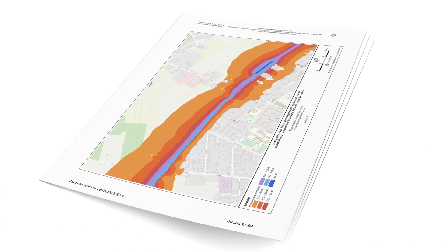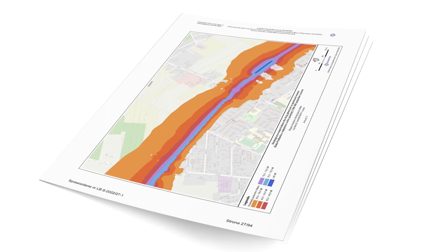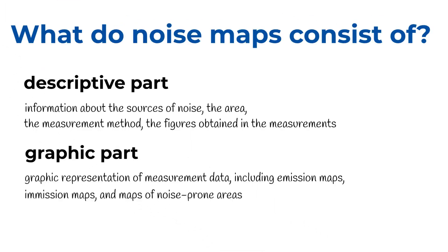The graphic part includes a graphic representation of measurement data, including emission maps and maps of noise-prone areas. By visualizing this data, acoustic maps provide a clear and detailed picture of the distribution and intensity of noise in different areas.